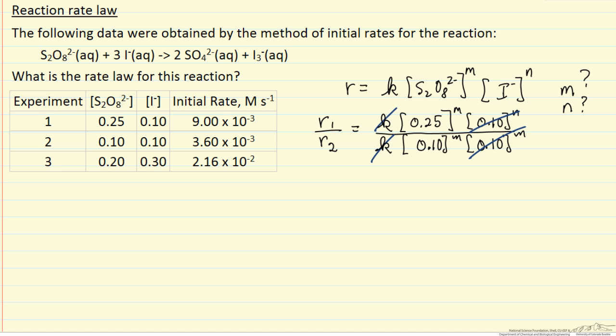If I write down the values of the rates, the value of the rate 9 times 10 to the minus 3 is rate 1, rate 2, 3.6 times 10 to the minus 3. So if I simplify, let's do it this way, 2.5 to the power m equals 2.5, m equals 1.